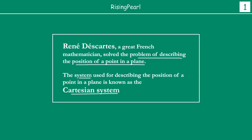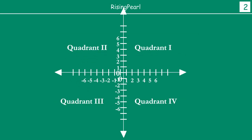Then in our webisode number 2 we saw the fundamentals of the Cartesian system. We noticed that basically what Rene Descartes suggested was that if you take any two perpendicular lines, we can always give the location of a point.